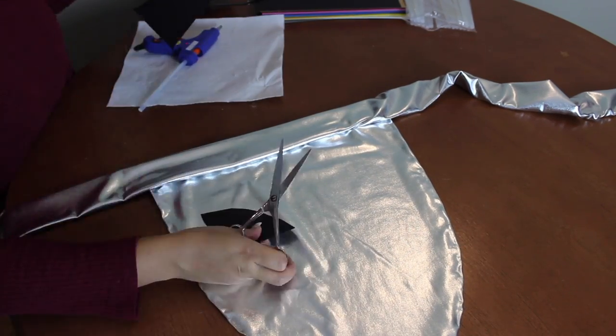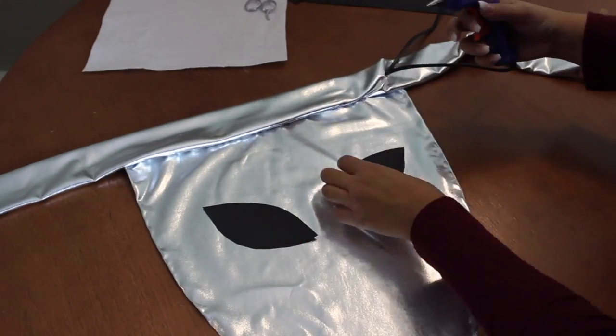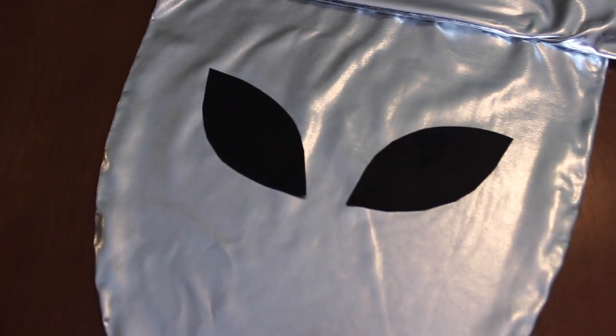Now we need some alien eyes. I took black construction paper to cut out the eyes, and hot glued them to the apron. How good does that look? All that with some scissors and a glue gun.